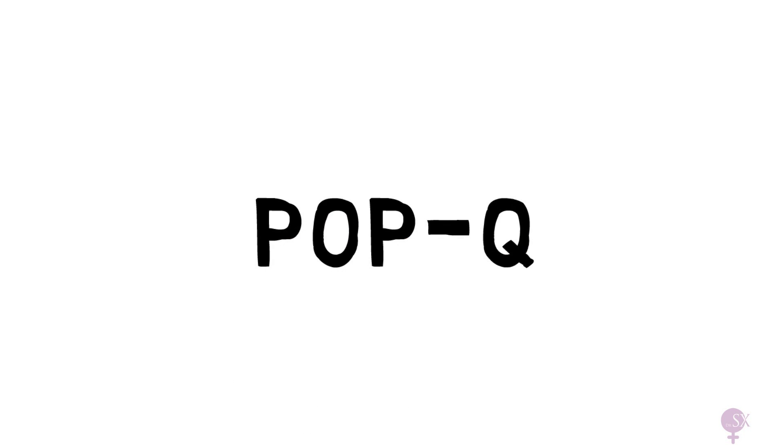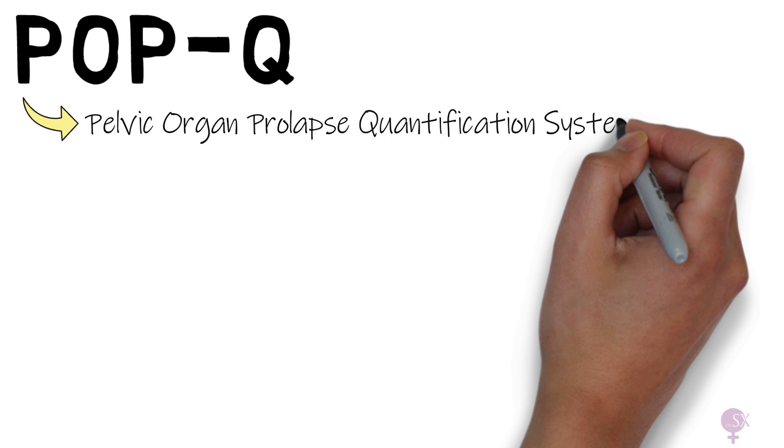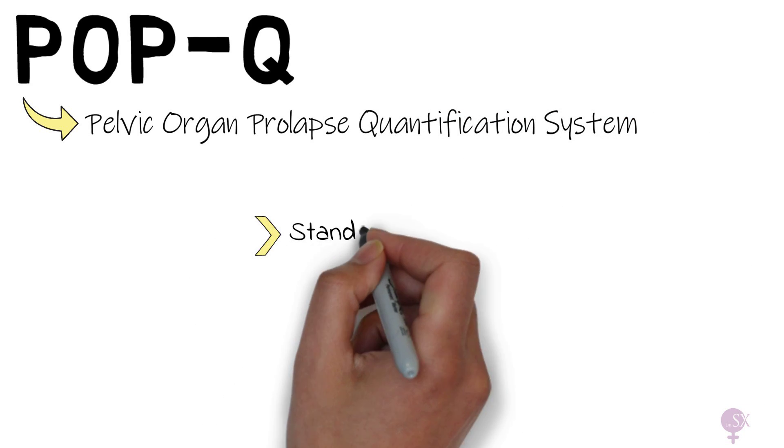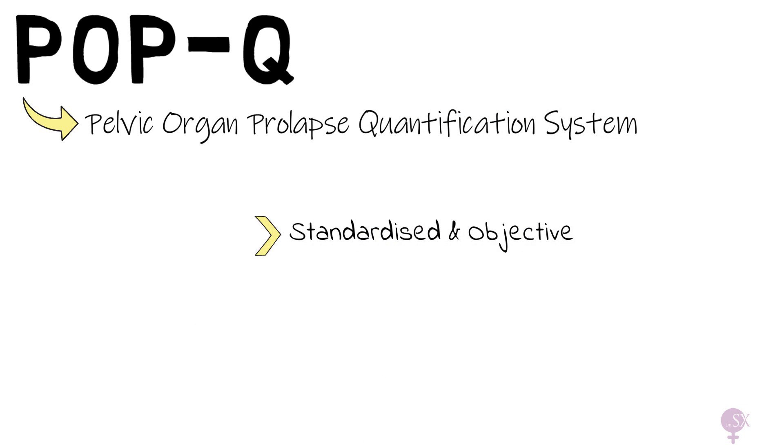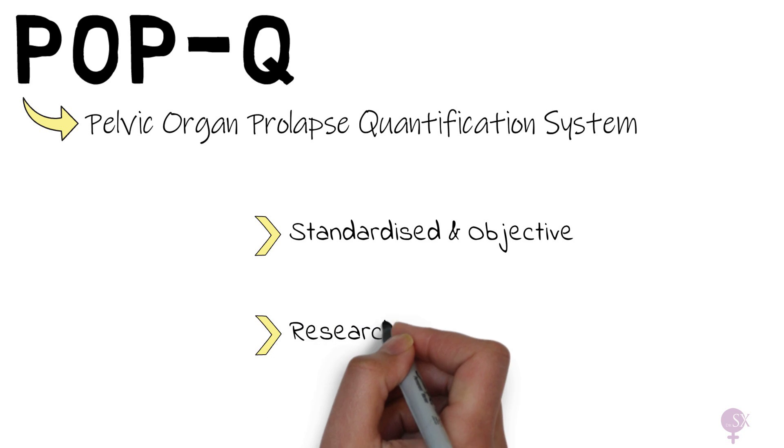POP-Q, short for Pelvic Organ Prolapse Quantification System, is a standardized and objective system used to assess, document, and stage pelvic organ prolapse. This makes it particularly useful when comparing data and techniques in different centers and for research purposes.